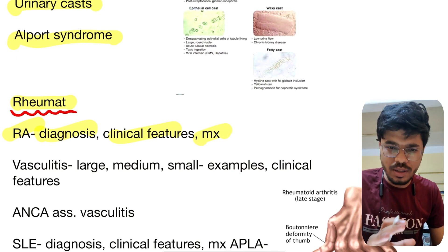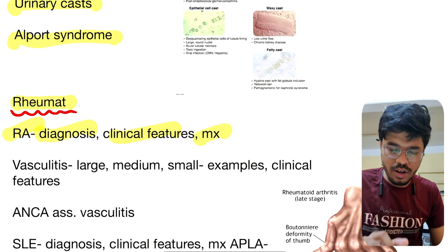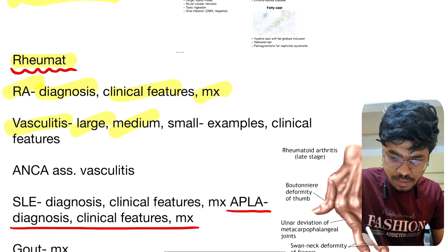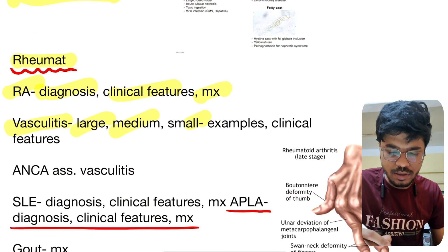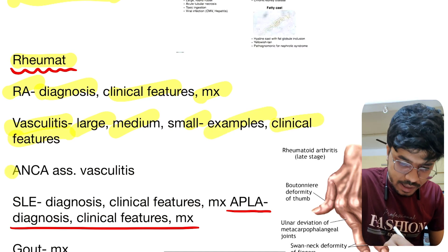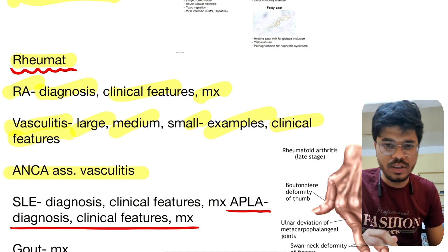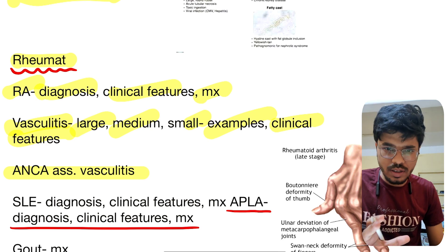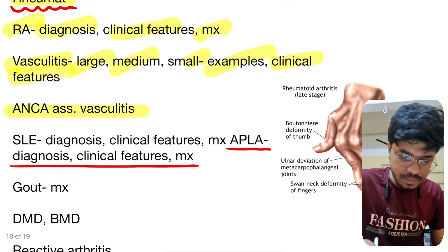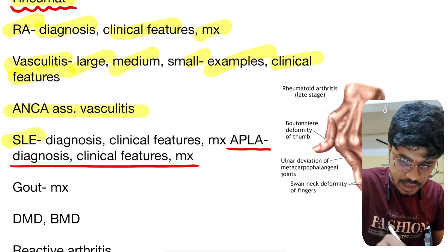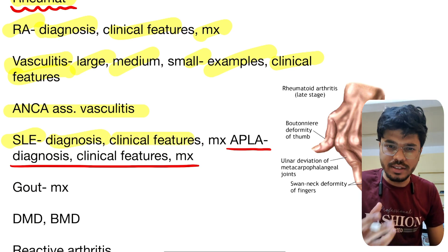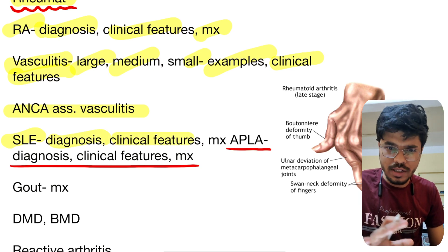In rheumat: rheumatoid arthritis — diagnosis, clinical features, management, boutonniere deformity, swan neck deformity — all the pictures and management are important. Vasculitis — large vessel vasculitis, medium vessel vasculitis, small vessel vasculitis — examples and clinical features. ANCA-associated vasculitis — p-ANCA and c-ANCA — all types are very very important.